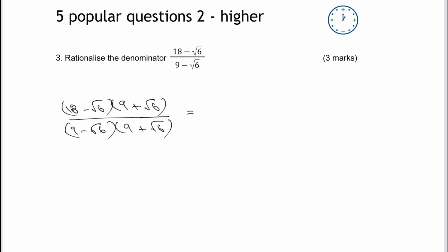So the top half of it is a little bit hard work. You've got 18 multiplied by nine, which is going to be 162. And then I've got 18 times root six. Well, that's easy enough at plus 18 root six.